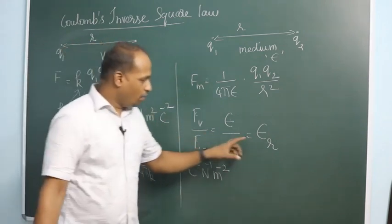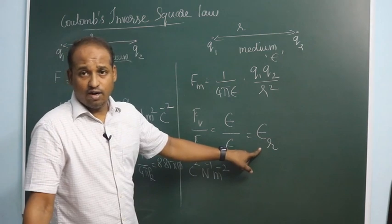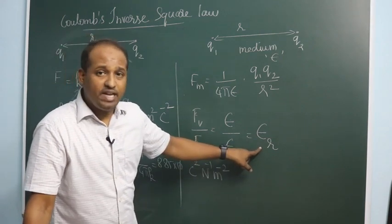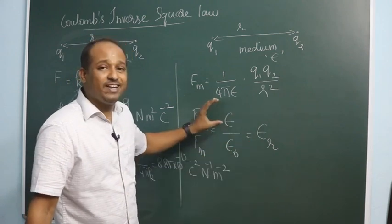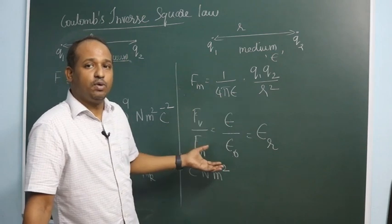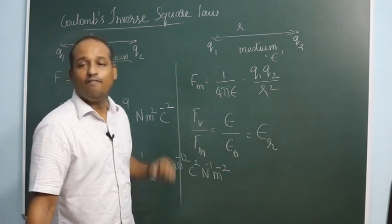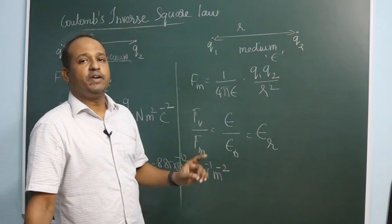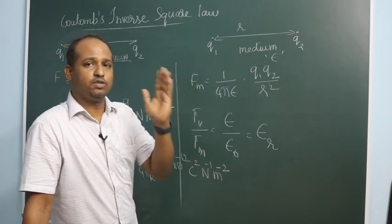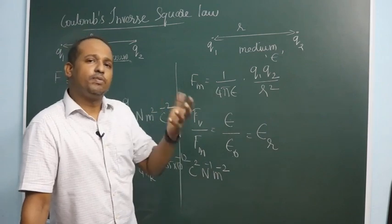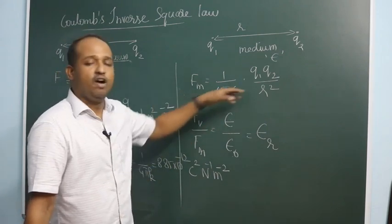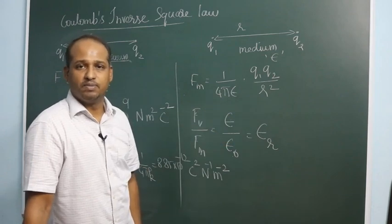For now, epsilon R, or the relative permittivity of a medium, is essentially how many times the permittivity of the medium is with respect to air or vacuum. If vacuum's permittivity is said to be 1, air's permittivity is like 1.0006. So approximately we can take both of them have almost equal permittivity for our problem-solving purposes.